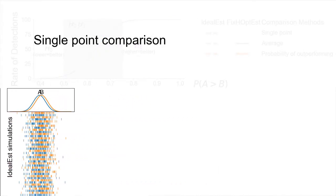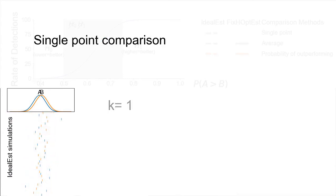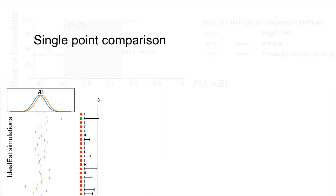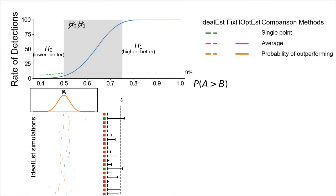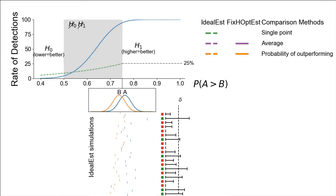Let's start with the single point comparison — we decrease the simulation to k equals 1. For each simulation, we represent the outcome with a square: red for negative, green for positive. If the difference computed is larger than delta, then the test is positive. As we reach 0.5, the rate of detection is at 9%, which is fairly high — common practice seeks a 5% detection rate at this point. As we reach 0.75, the rate of detection is at 25%, which is very low. We would seek a 95% detection rate at this point. Single point comparison is far from optimal.